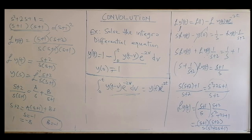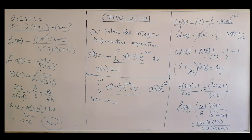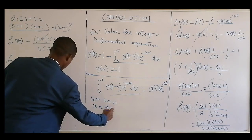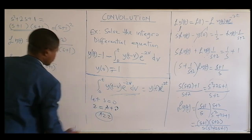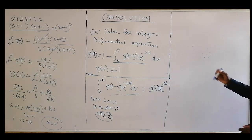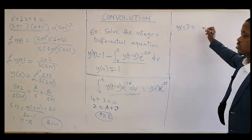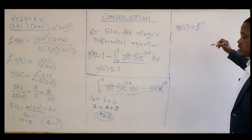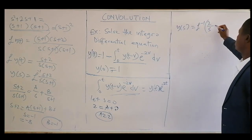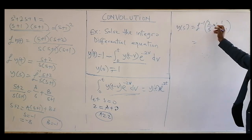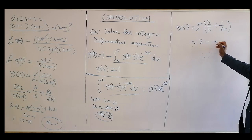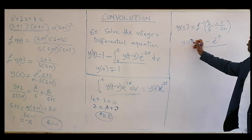Let s = 0: then 2 = A times 1, so A = 2. Therefore Laplace of y = 2/s minus 1/(s+1). Taking the inverse Laplace transform, y(t) = 2 minus e^(-t). That is the solution to the equation.